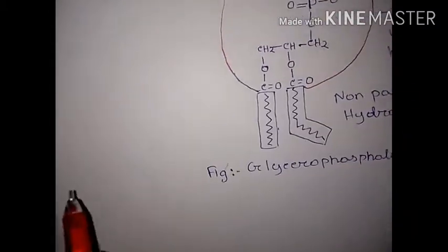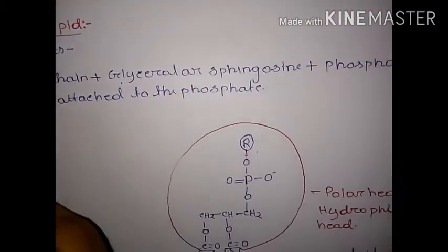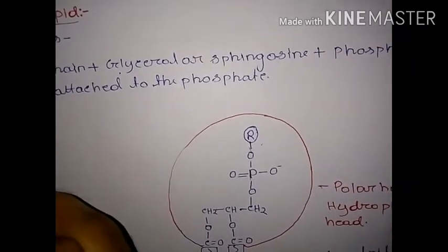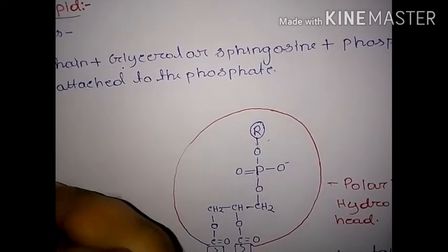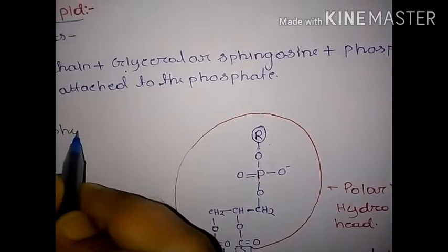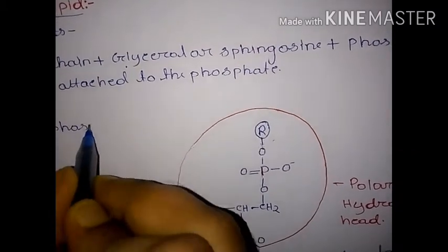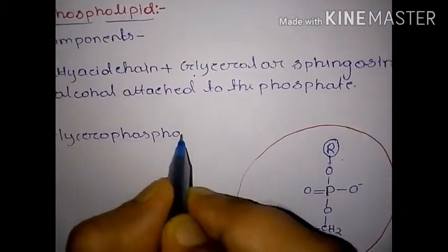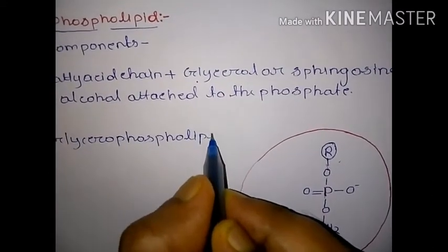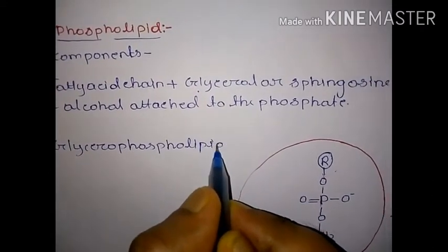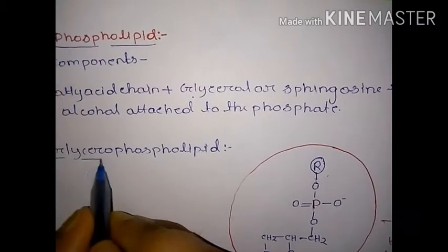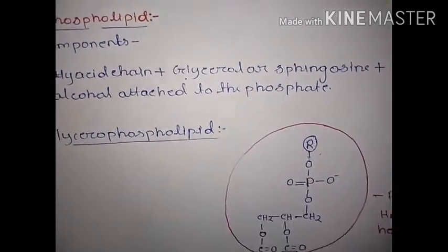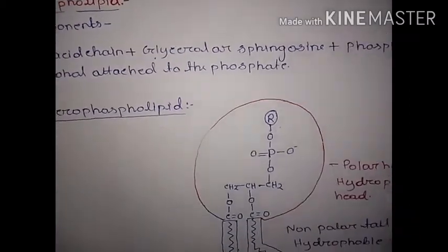Now we discuss the structure of glycerophospholipid. It is called glycerophospholipid because glycerol is attached with the fatty acid chain. In the case of sphingosine phospholipids, sphingosine is attached with the fatty acid chain instead.